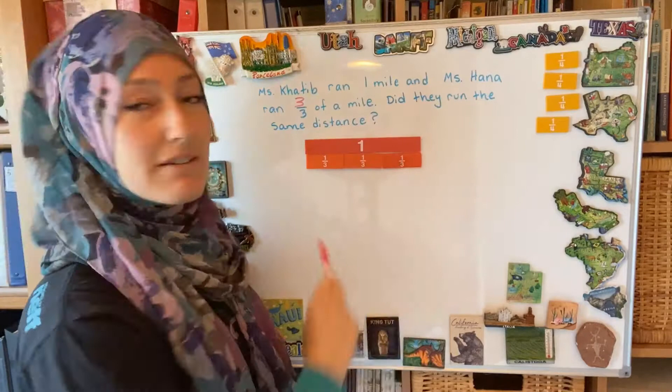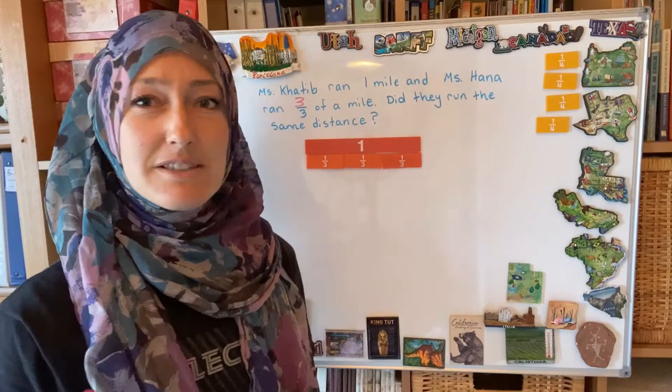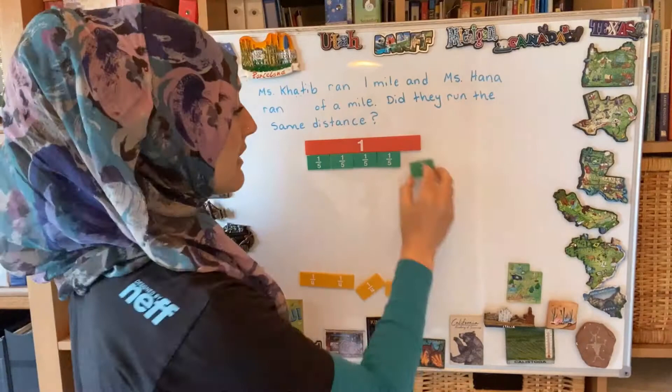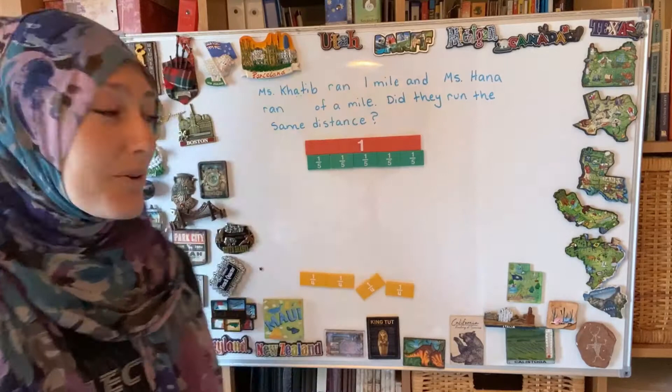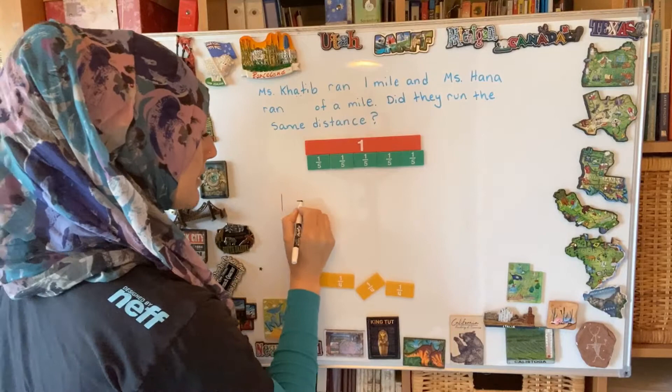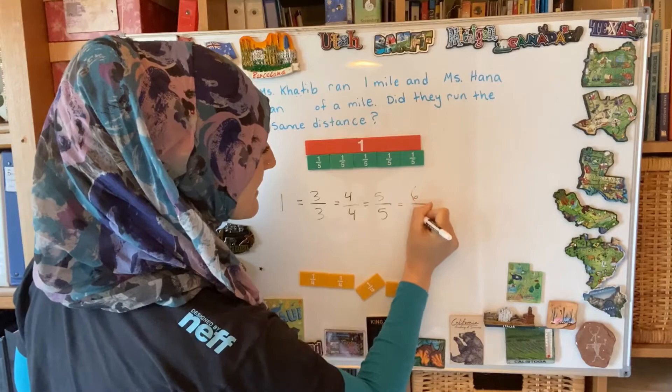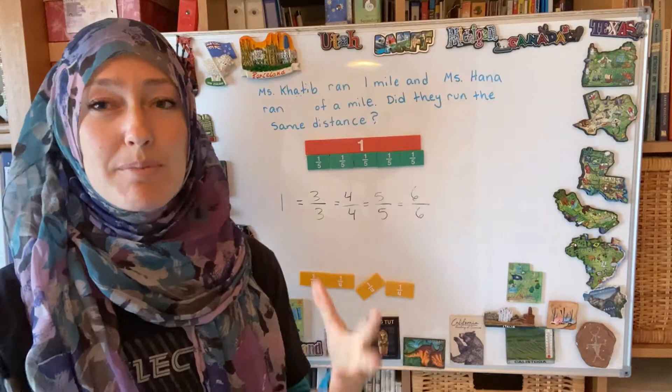I can use any part to represent one mile, as long as they're equal sizes and I keep track of them. What if I used a fifth-sized piece? There would be a fifth, and five-fifths. I need five-fifths to make one whole. So pretty much one can be equal to three-thirds, four-fourths, five-fifths, six-sixths. Anytime the numerator and the denominator are the same, you are representing one whole amount.